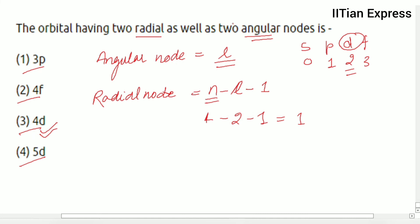So what we are going to do, we are going to consider option 4. Then 5 minus 2 minus 1, it is going to be 2. And it is also having the value of 2, so option d is the correct answer.